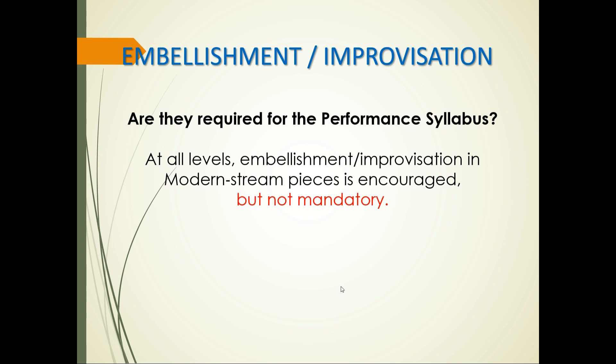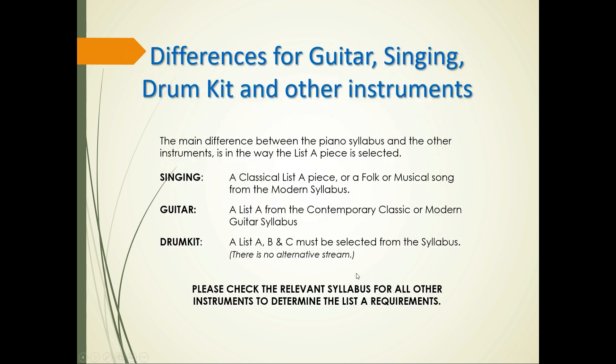Regarding embellishment and improvisation: at all levels, embellishment or improvisation in modern stream pieces is encouraged, but it is not mandatory for the performance syllabus. To recap, the main requirements are: list A must be from a classical list A or one of the alternative modern pieces from the performance supplement; list D requirements must be met; and a contrasting program is essential.